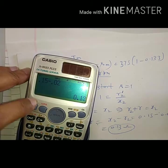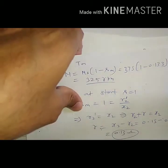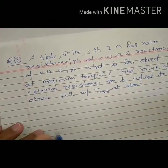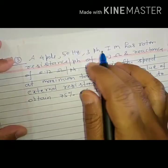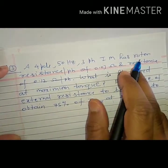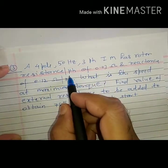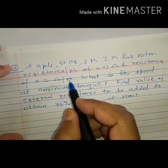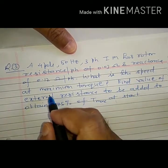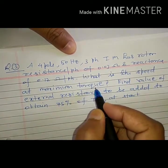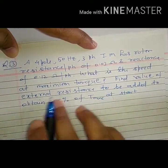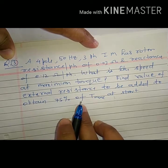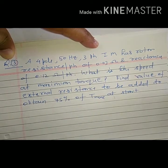Let us see the next numerical. A 4-pole, 50 Hz, 3-phase induction motor has rotor resistance per phase of 0.03 Ohm and reactance of 0.12 Ohm per phase. What is the speed at maximum torque? Find value of external resistance to be added to obtain 75% of Tmax at start.